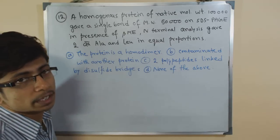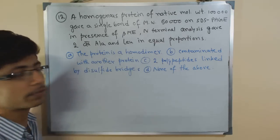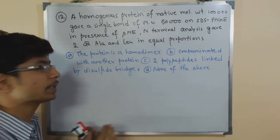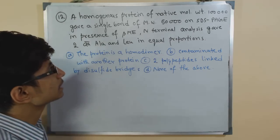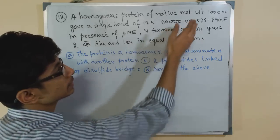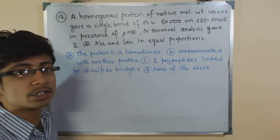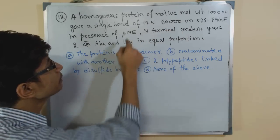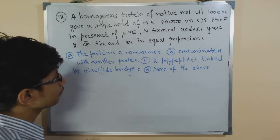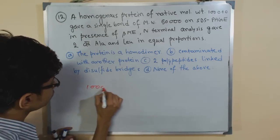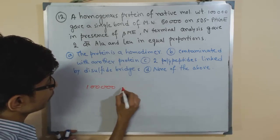So what will be our conclusion? Here are 4 different options for that. Now in this case what they have told us is that a native protein molecular weight is 1 lakh and a single band that is obtained after treating that protein with beta-mercaptoethanol is 50,000.